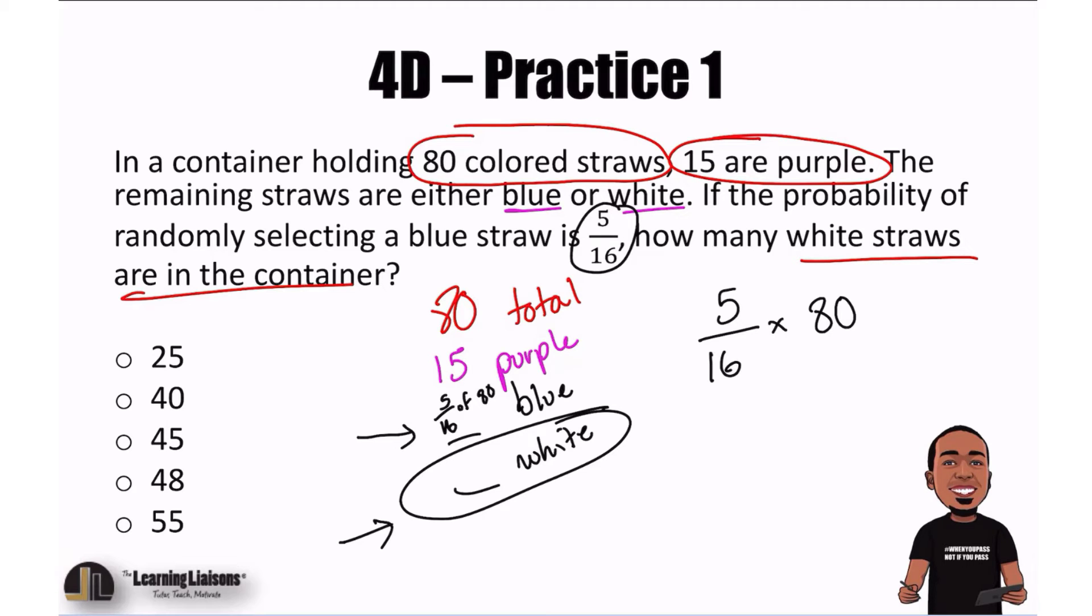80 divided by 16, that is what? Let's go ahead and grab our calculators here to make life easier. 80 divided by 16 should be 5, actually, if I'm not mistaken. And I might sound really dumb for a second.